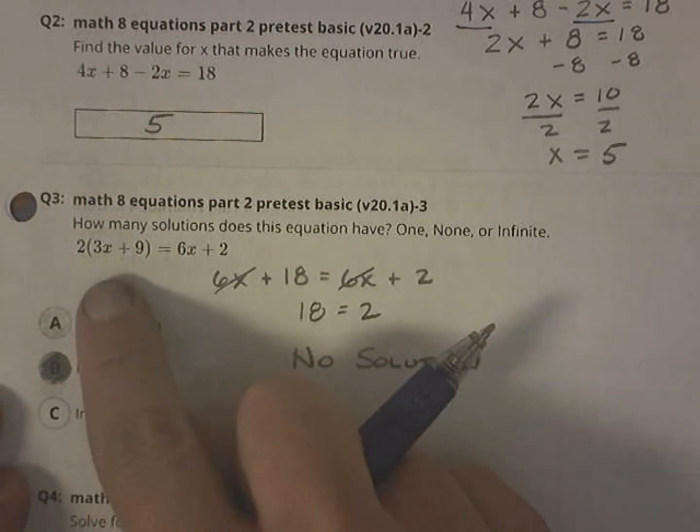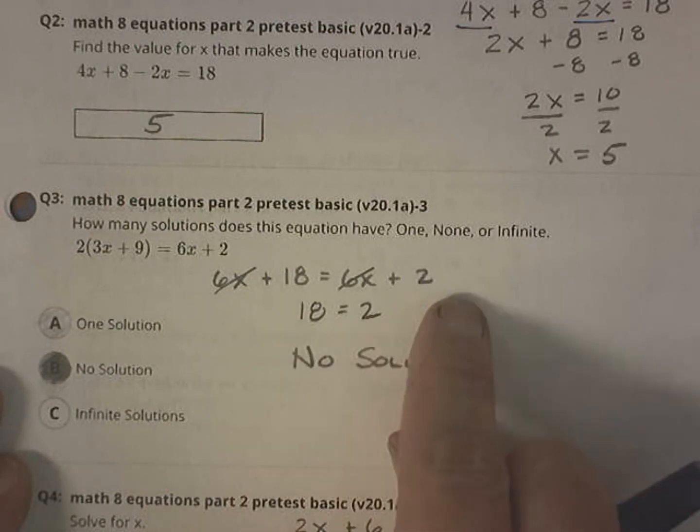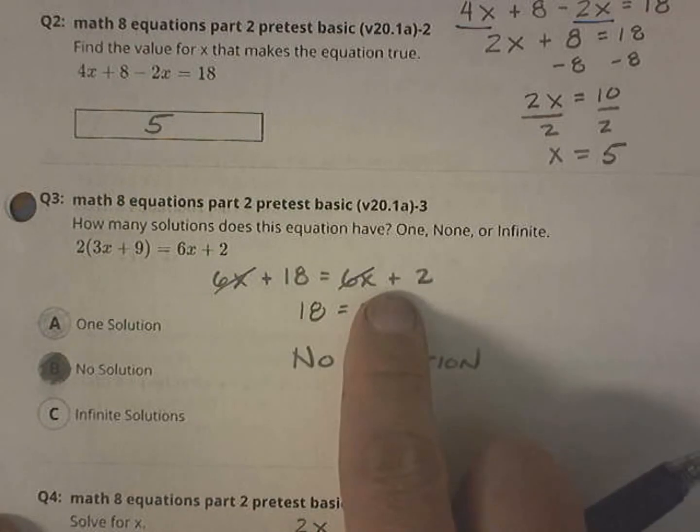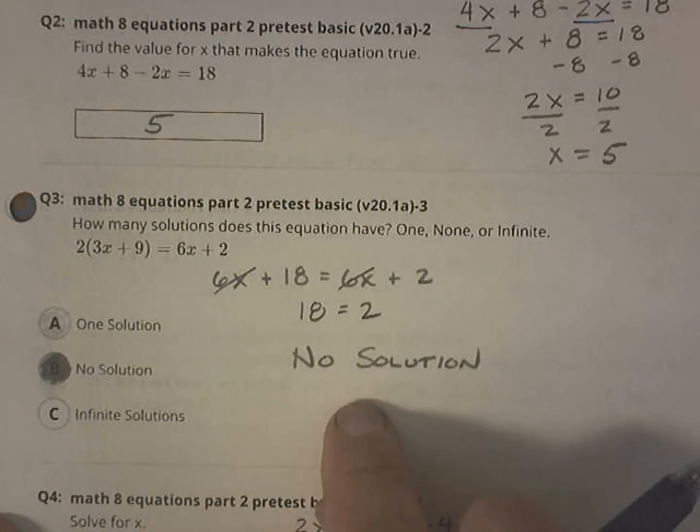This one, I'm going to start with some distribution. So I'll distribute, and that gives me 6x plus 18 equals 6x plus 2. You notice that there's a 6x on both sides that I can cancel out, leaving with 18 equals 2, which means no solution.